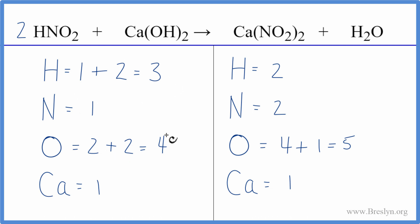But let's update these numbers here. For the hydrogens, we have one times two plus the one times the two. That gives us four hydrogens. Nitrogens, one times two. So we did balance the nitrogens.